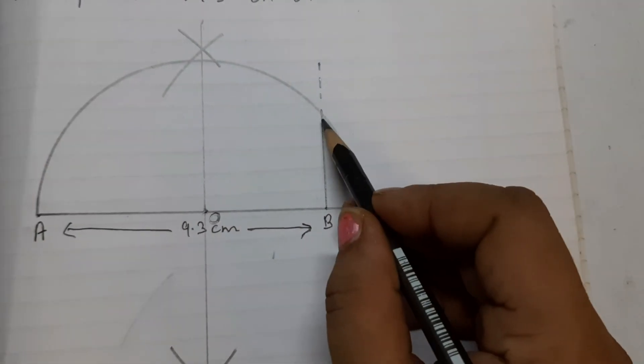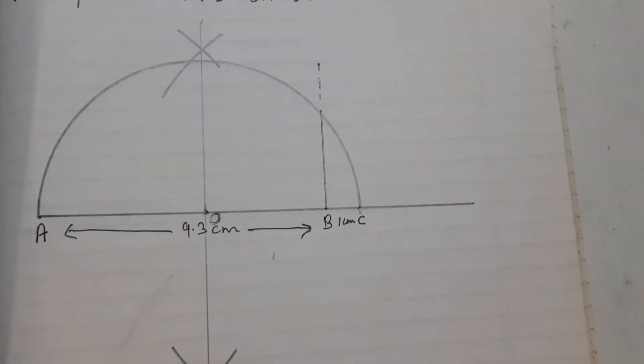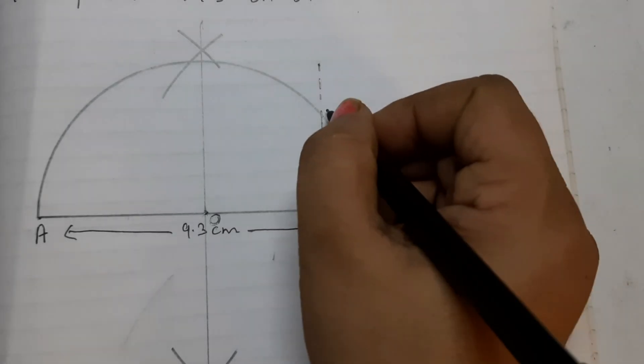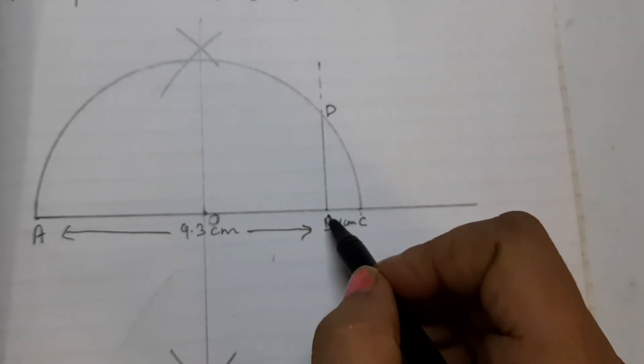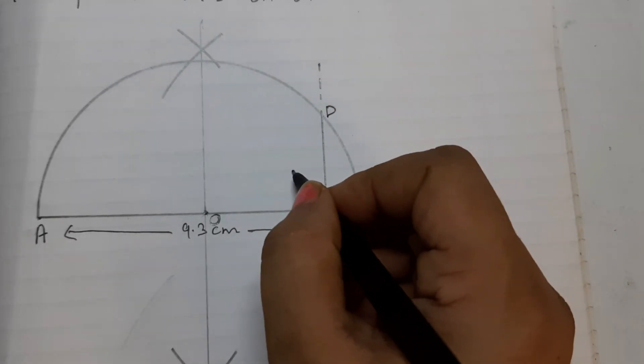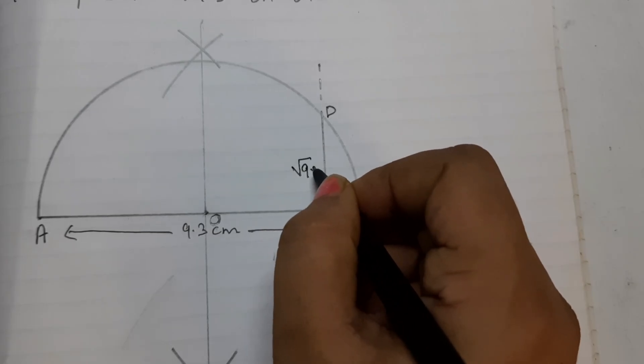Now, this line is intersecting the semicircle at this point, label this as D. BD is equal to square root of 9.3.